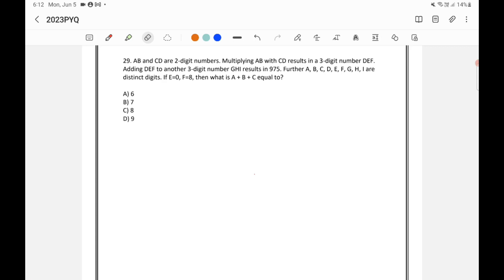AB and CD are two digit numbers. Multiplying AB with CD will result in a three digit number DEF. So AB into CD is equal to DEF.